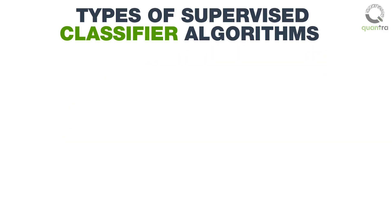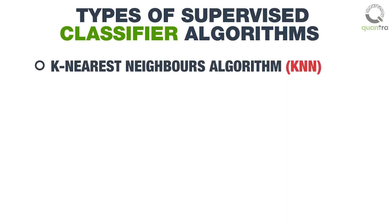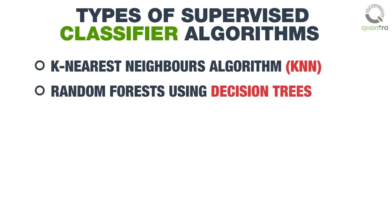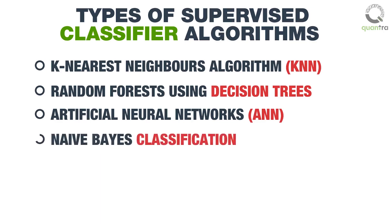The algorithms that we will cover are K-nearest Neighbors Algorithm (KNN), Random Forests Using Decision Trees, Artificial Neural Networks (ANN), and Naive Bayes Classification.